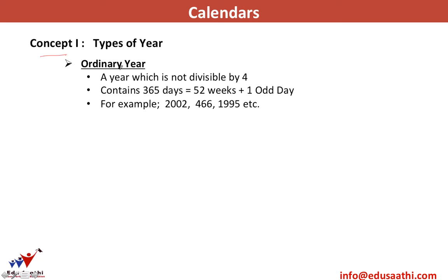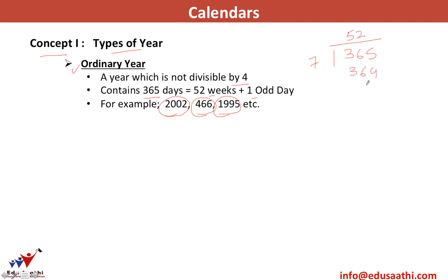The first concept is the types of years. An ordinary year is a year not divisible by 4, for example 2002, 466, or 1995. An ordinary year contains 365 days, which is 52 weeks and 1 odd day. How? Divide 365 by 7: 7 × 52 = 364, with remainder 1. The quotient gives completed weeks, and the remainder gives the odd day.